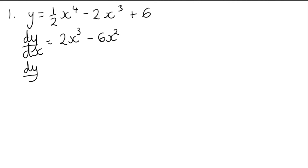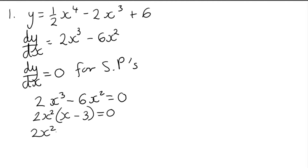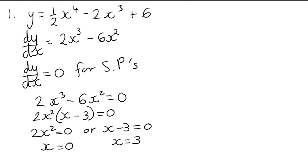We put dy/dx equal to 0 for stationary points. So 2x cubed minus 6x squared equals 0. We factorise by taking out a highest common factor of 2x squared, then put both equal to 0. If 2x squared equals 0, then x equals 0. If x minus 3 equals 0, x equals 3. You were just asked for the x-coordinates; if you needed the full coordinate, you'd substitute back into the original y equation.